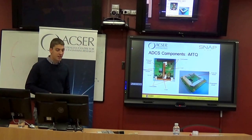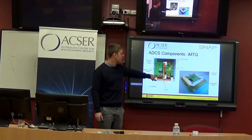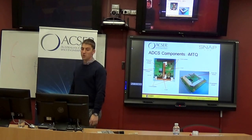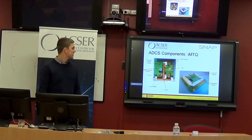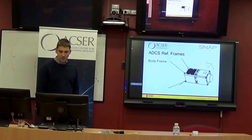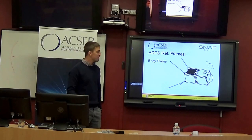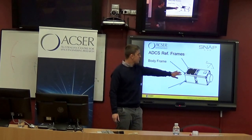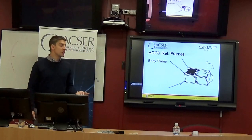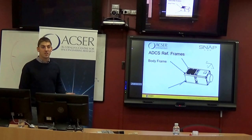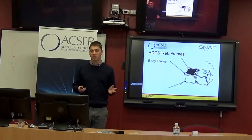The magnetorquers consist of X and Y rod torquers that fit nicely in the standard board form factor, and a Z air-core coil — because you don't want to run a core down the longitudinal axis. The body frame of ECO: the Z axis faces out the back of the satellite, the Y axis is the nadir-facing direction toward the nadir camera and nadir-pointing instruments, and the X axis makes up the right-hand system.